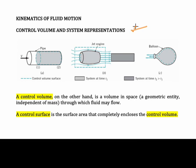First we need to know what is the control volume and system representation. A control volume is a volume in space through which fluid may flow. For example, consider a hollow pipe with water flowing from left to right. If we want to know what happens to the flowing fluid, we take a volume for our analysis — this is the control volume.